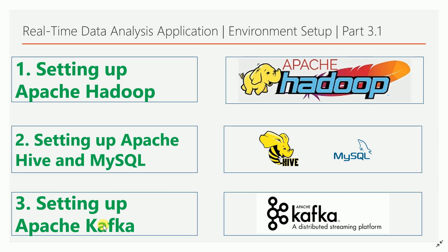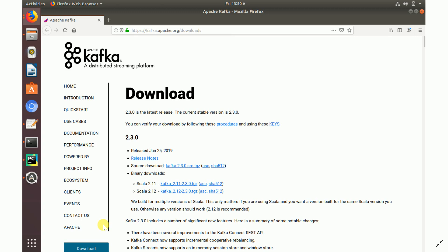The third component is Apache Kafka. Apache Kafka is a distributed messaging system — it's a publish-subscribe style messaging system, not a traditional message queuing system. Let's see how to install Apache Kafka on Ubuntu 18.04.